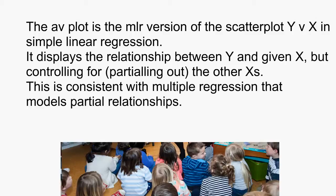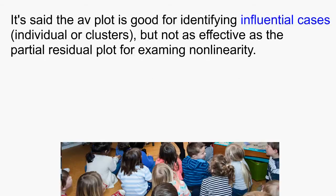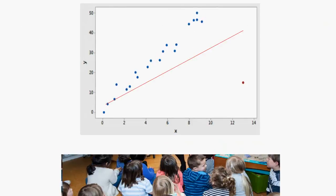This is consistent with multiple regression that models partial relationships. The AV plot is good for identifying influential cases, but not as effective as the partial residual plot for examining non-linearity. Recall a case is said to be influential if its removal leads to big change in parameter estimates.